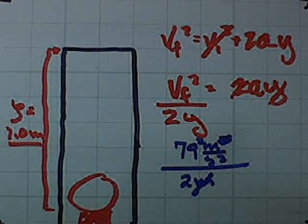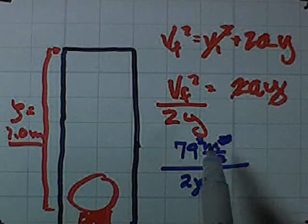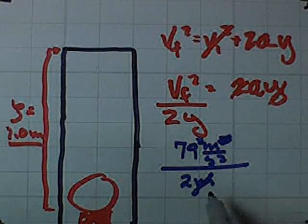79 squared would be about 6,272, and then take half of that. That'll be my rate of acceleration, or about 3,136. And the units are going to be meters per second squared, which are the units I'm looking for.